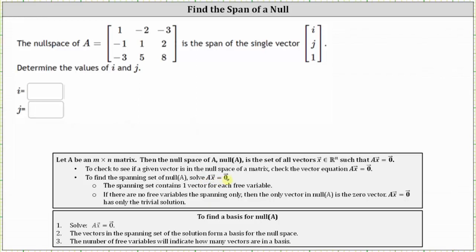The vectors in the spanning set of the solution form a basis for the null space. So we need to set up the equation A times vector x equals the zero vector, which gives us the vector equation where we have matrix A times vector x with components x sub one, x sub two, x sub three equals the zero vector.